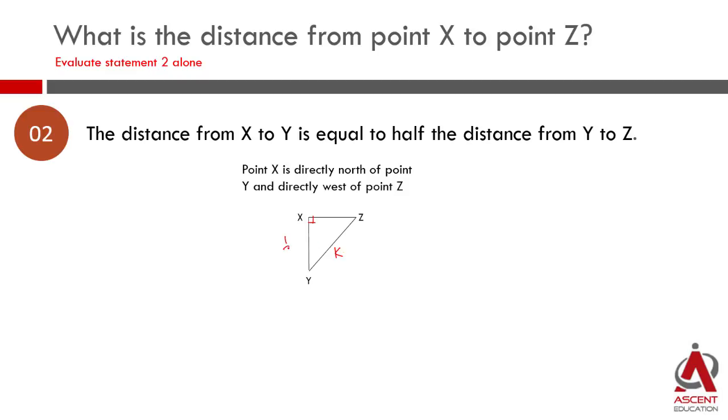X to Y is going to be half the distance from Y to Z. So if Y to Z is K, then X to Y is half of K. So if K is 100, half K is 50. If K is 50, K is 150, half K is 75.